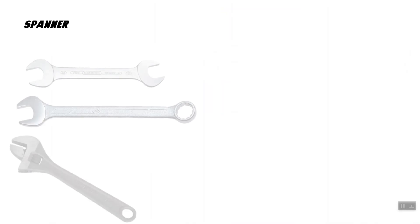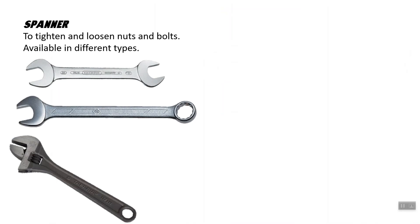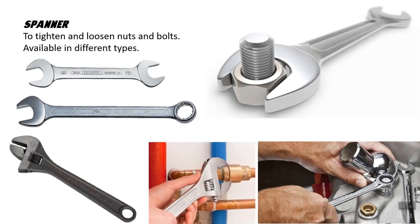Another driving tool is the spanner. There are different types of spanners, which we use to tighten and loosen nuts and bolts. They are available in different sizes. As you can see in the picture, this is an essential tool to tighten and untighten nuts and bolts. The third one shown below is an adjustable spanner. It is a very useful and important tool in the workshop.